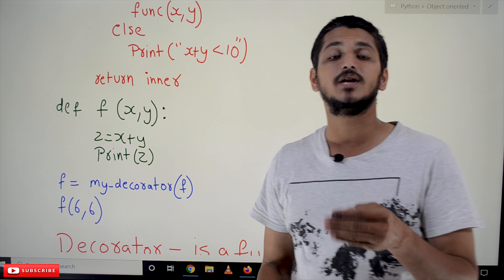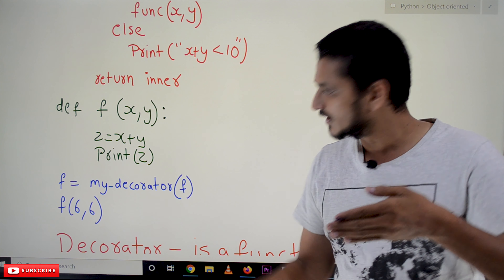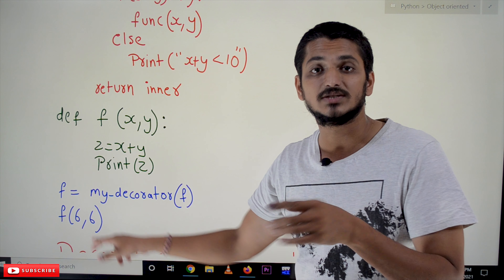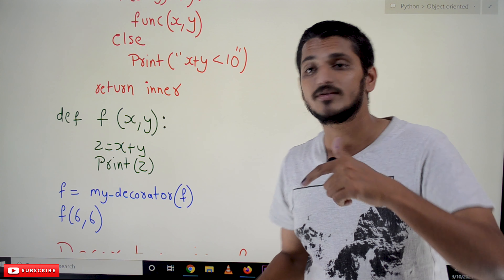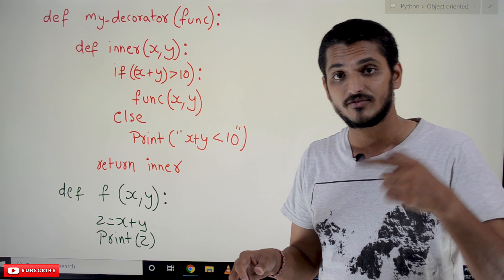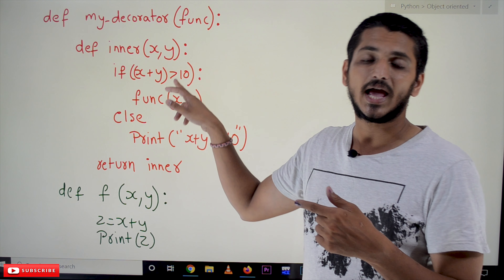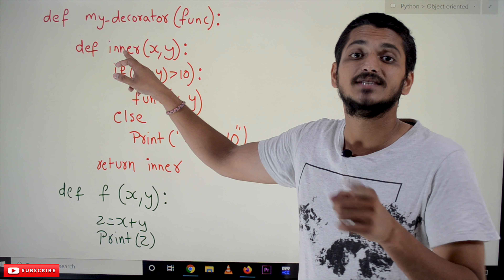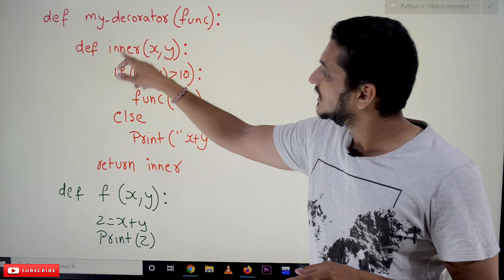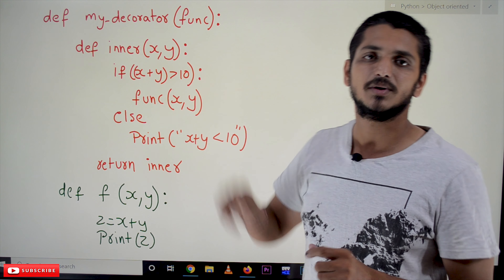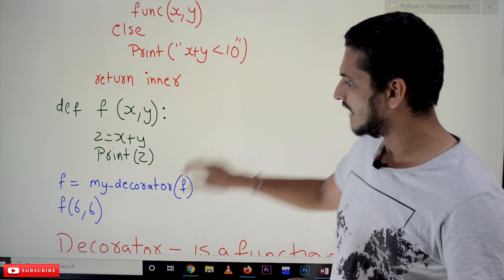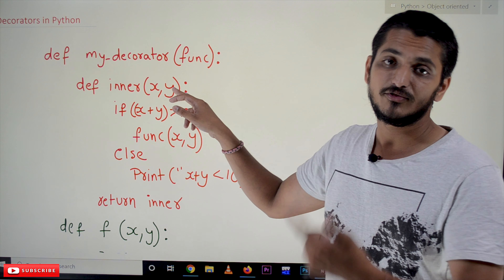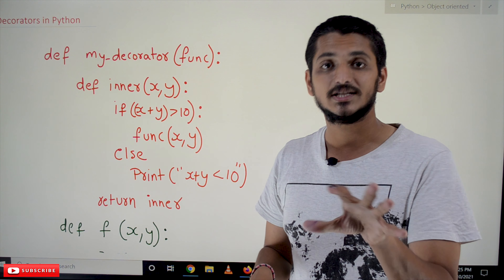Now `f` is pointing to the reference of the inner function. If you call `f(6, 6)`, the inner function will be called, because `f` is referring to this inner function. The inner function has access to the `func` variable from `my_decorator`. `my_decorator(f)` means the reference of `f` is placed in `func`. If you use `func` as a function, function `f` will be called.